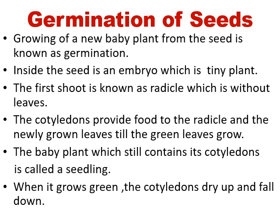Growing of a new baby plant from a seed is known as germination. Inside the seed is an embryo, which is a tiny plant. The first shoot is known as the radicle, which is without leaves. The cotyledons provide food to the radicle because it has no leaf at all, and without leaves there is no food. The cotyledons provide food up to the time green leaves grow. The baby plant which still contains the cotyledons is called a seedling.